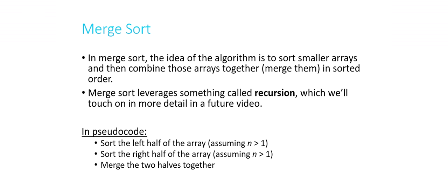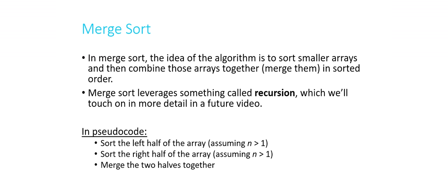In merge sort, the idea is to sort smaller arrays, and then combine those arrays together — or merge them, hence the name of the algorithm — in sorted order. So instead of thinking about one six-element array, let's think instead that we have six one-element arrays, and then recombine them in the correct order. That would be one way to sort it, and that's what merge sort does. It leverages something called recursion, which we'll talk about in another video.